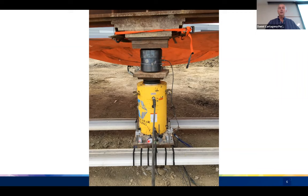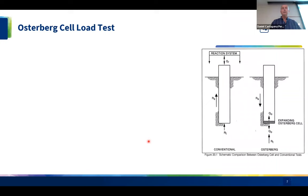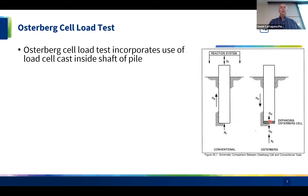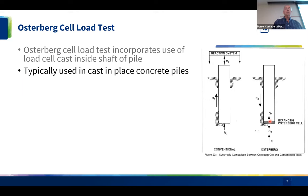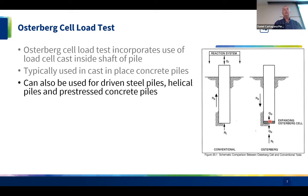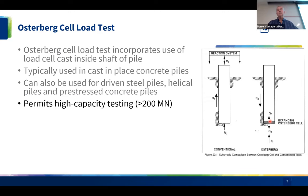Now comparing to the O-cell test: in a conventional test you push from the top down, but in the O-cell test the cell is embedded deep in the pile — typically near the tip — and it physically expands, pushing up and pushing down simultaneously. These are most commonly used in cast-in-place concrete piles, but can also be used for driven steel, helical, and pre-stressed concrete piles.